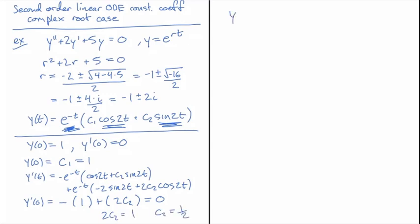And now we can write down the particular solution for this initial condition. That's going to be e to the minus t. And the c1 is 1, so I just have a cosine of 2t here. And then the coefficient c2 is 1 half, so I have plus 1 half sine of 2t.